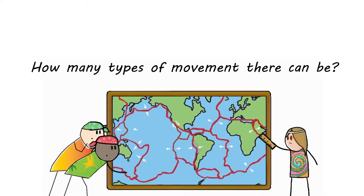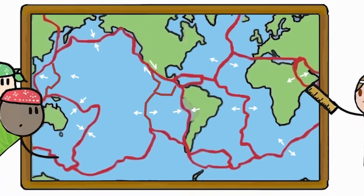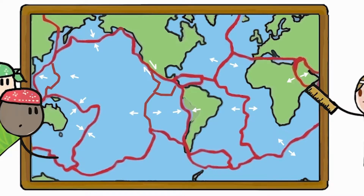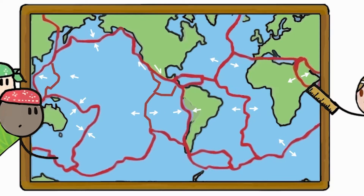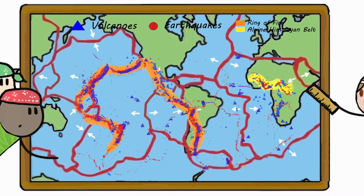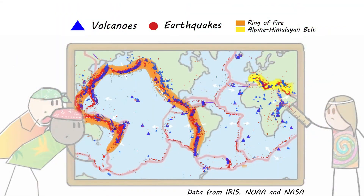Can you guess how many different types of movement there can be? The answer is three. Plates can move towards each other at convergent plate boundaries, away from each other at divergent plate boundaries, and slide past each other at transform boundaries. Plate boundaries have the most earthquakes and volcanoes.